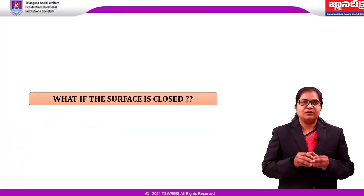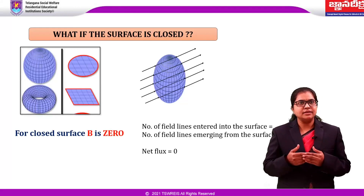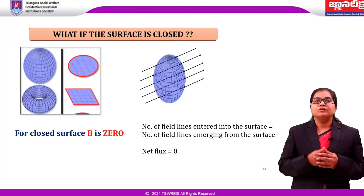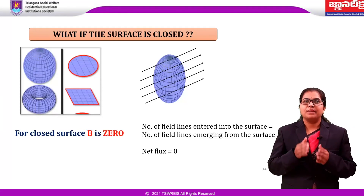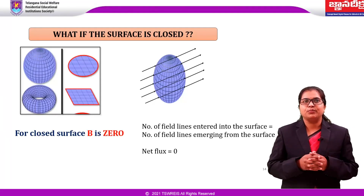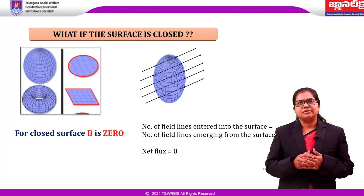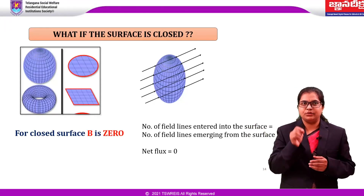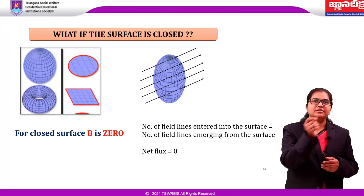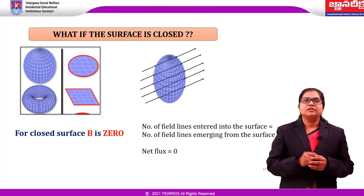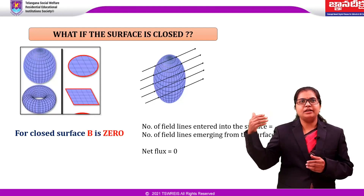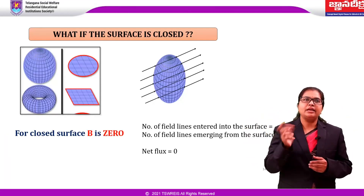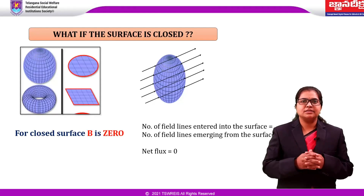What if the surface is closed? For a closed surface, magnetic flux is zero. Why? Because the number of field lines entering into the surface is equal to the number of field lines emerging from the surface. This means the number of field lines entering and emerging is the same, so the net flux is zero.